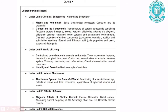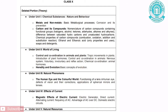The second chapter under Unit 1 is Carbon and Its Compounds. The topics removed are: Nomenclature of Carbon Compounds containing Functional Groups — Halogens, Alcohols, Ketones, Aldehydes, Alkenes and Alkynes; Difference between Saturated and Unsaturated Hydrocarbons; Chemical Properties of Carbon Compounds — Combustion, Oxidation, Addition and Substitution Reactions; Properties and Uses of Ethanol and Ethanoic Acid; and Soaps and Detergents.